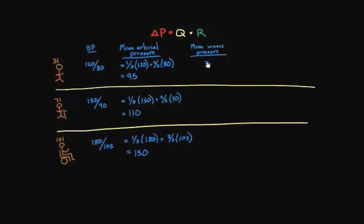So mean venous pressure right now is about 5. And let's assume, this is one of a few assumptions we're going to make, let's assume that it doesn't change. That over a few years, it really stays around the same, it's about 5. Well then if I know that, my delta P is easy to figure out. I can just take 95 minus 5, and that would get me 90. And I can take 110 minus 5, and that's 105. And I can take 130 minus 5, and that's 125.